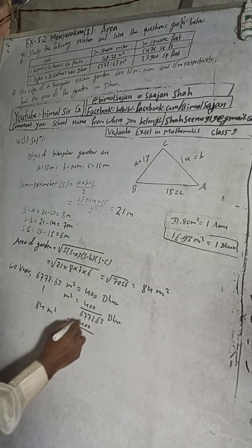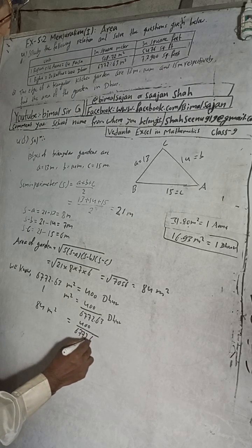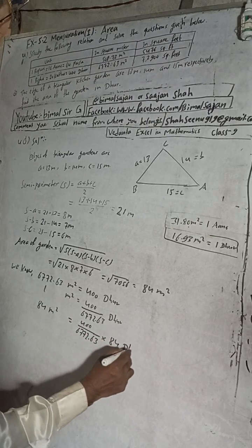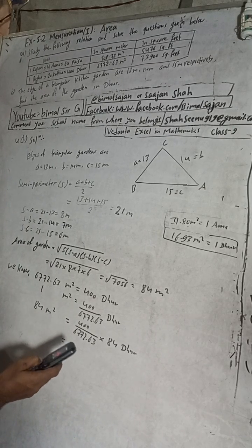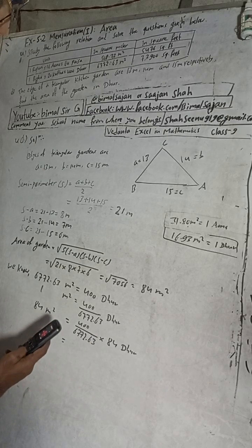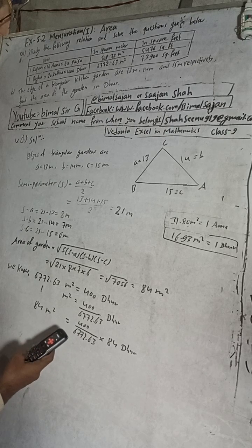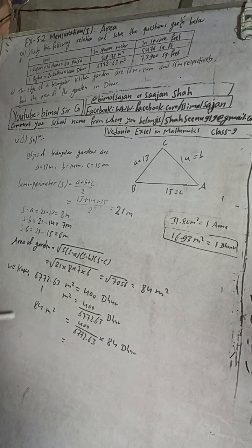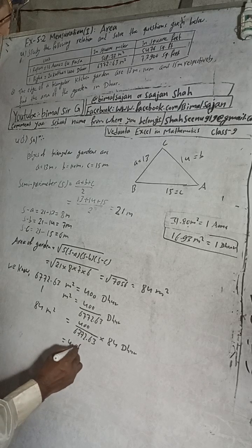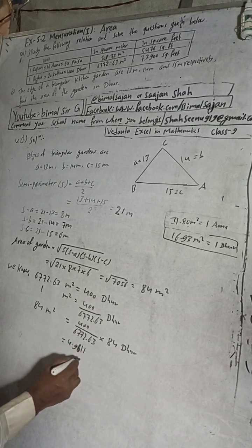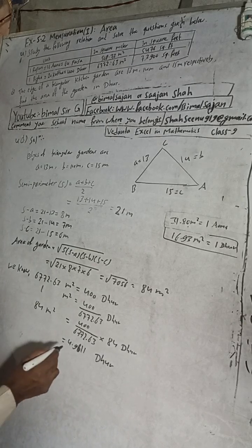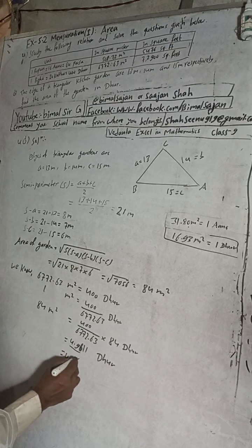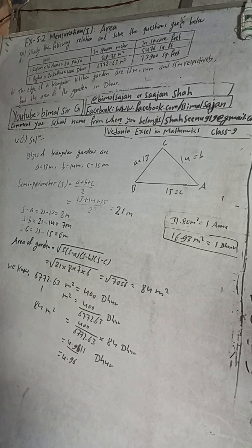This is equal to — doing the calculation — approximately 6772.63, and dividing gives us 4.96. In the book, the answer is here: 4.96. This must be rounded up and this is less than 5, so this is the final answer.